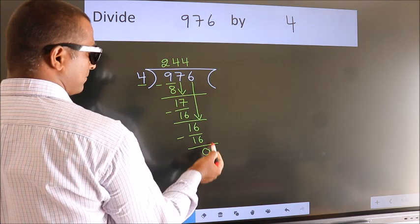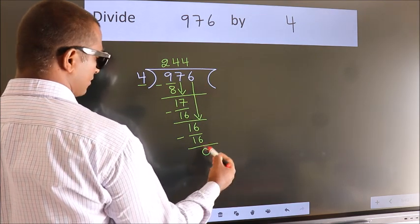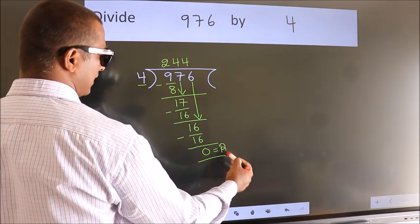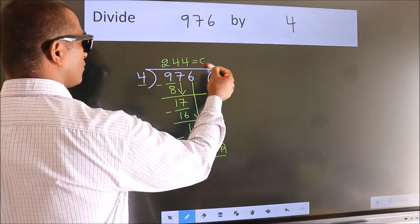No more numbers to bring it down. So, we stop here. This is our remainder. This is our quotient.